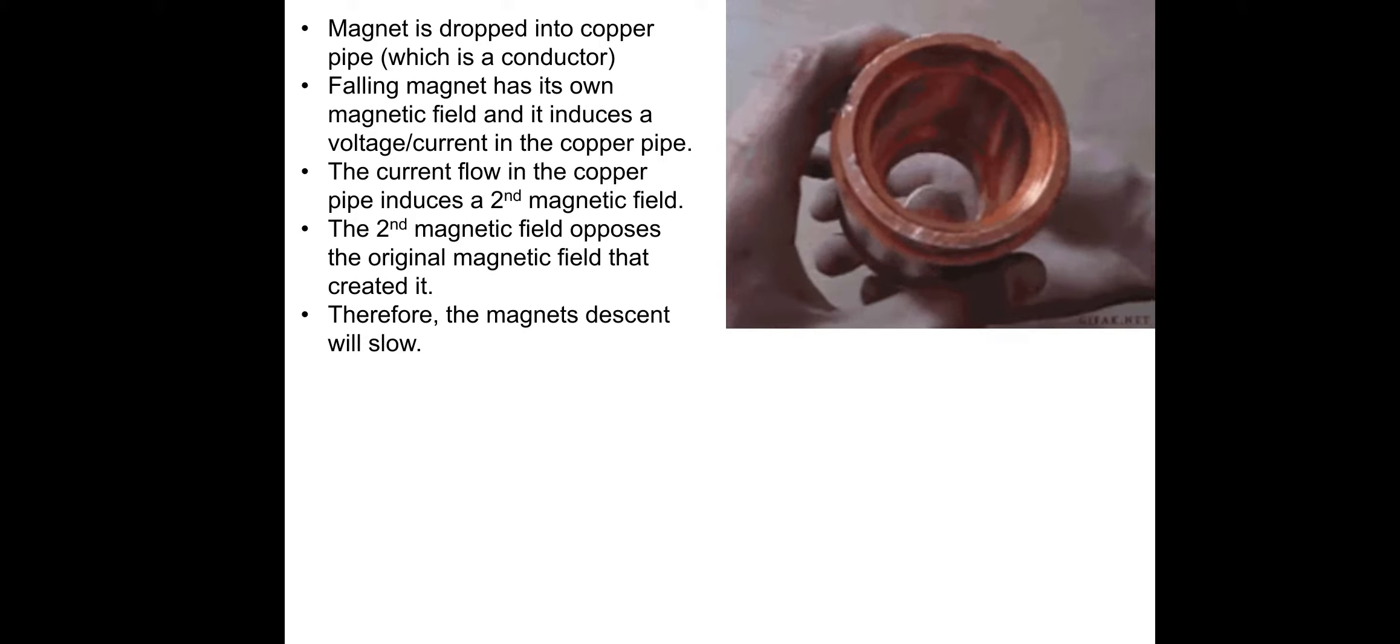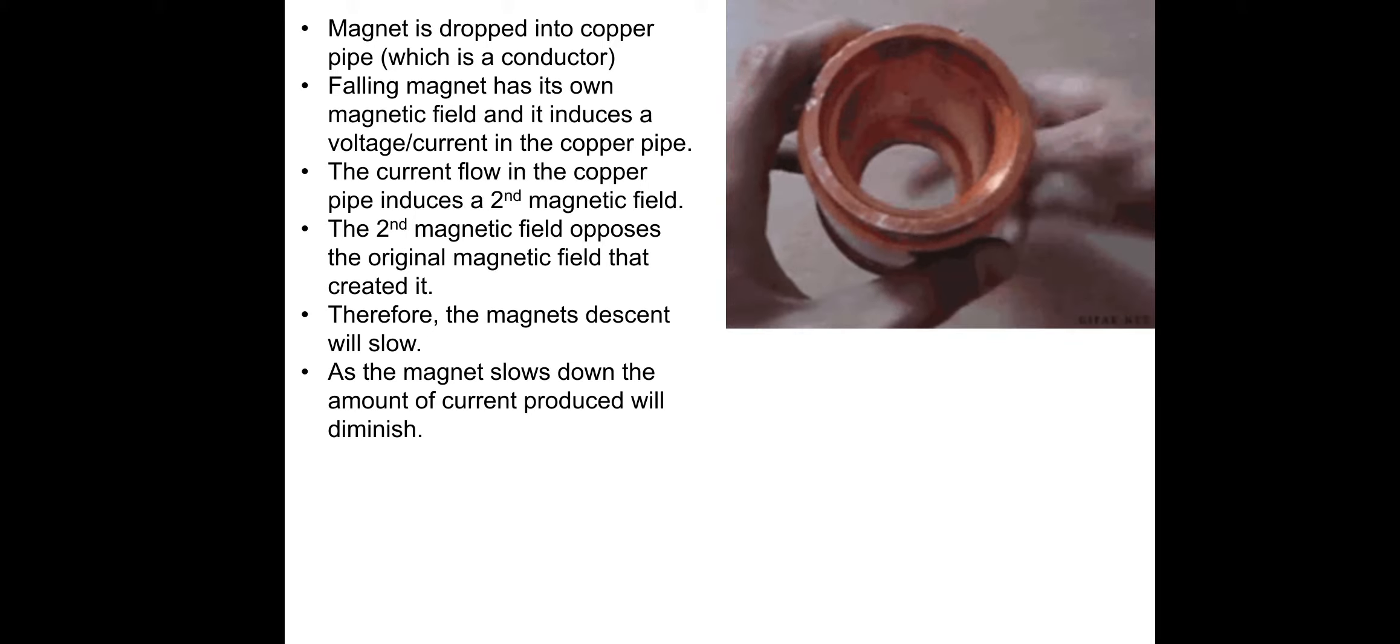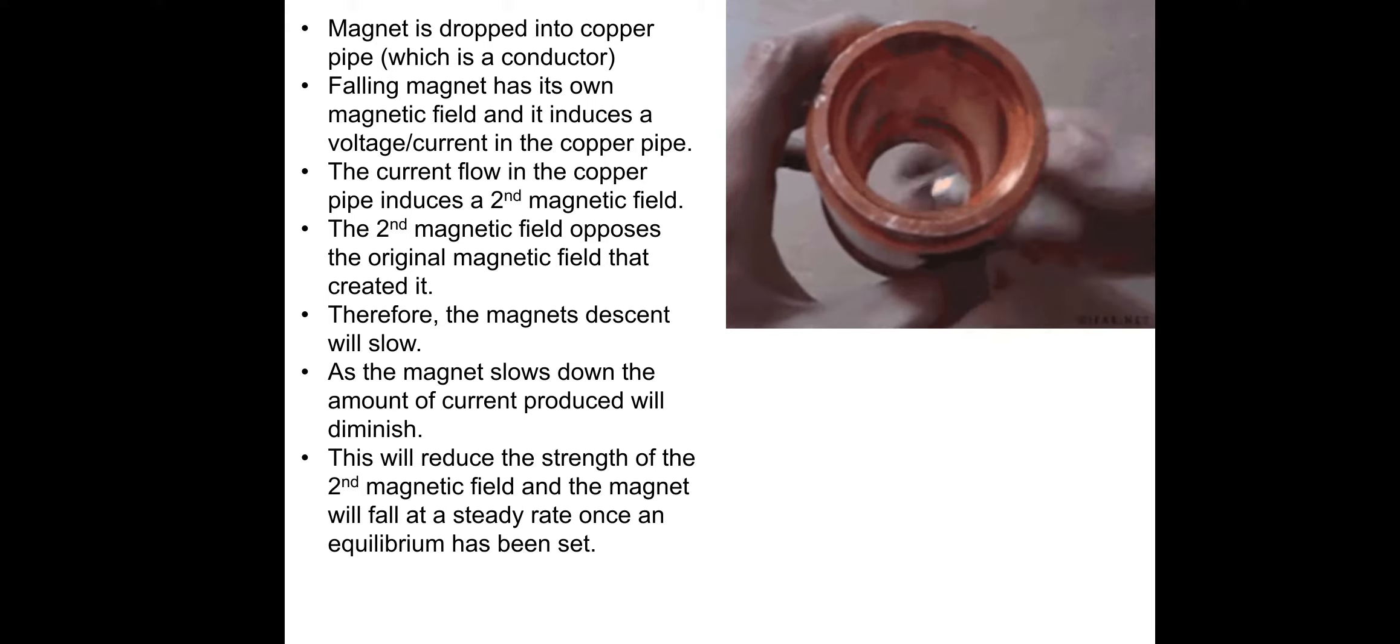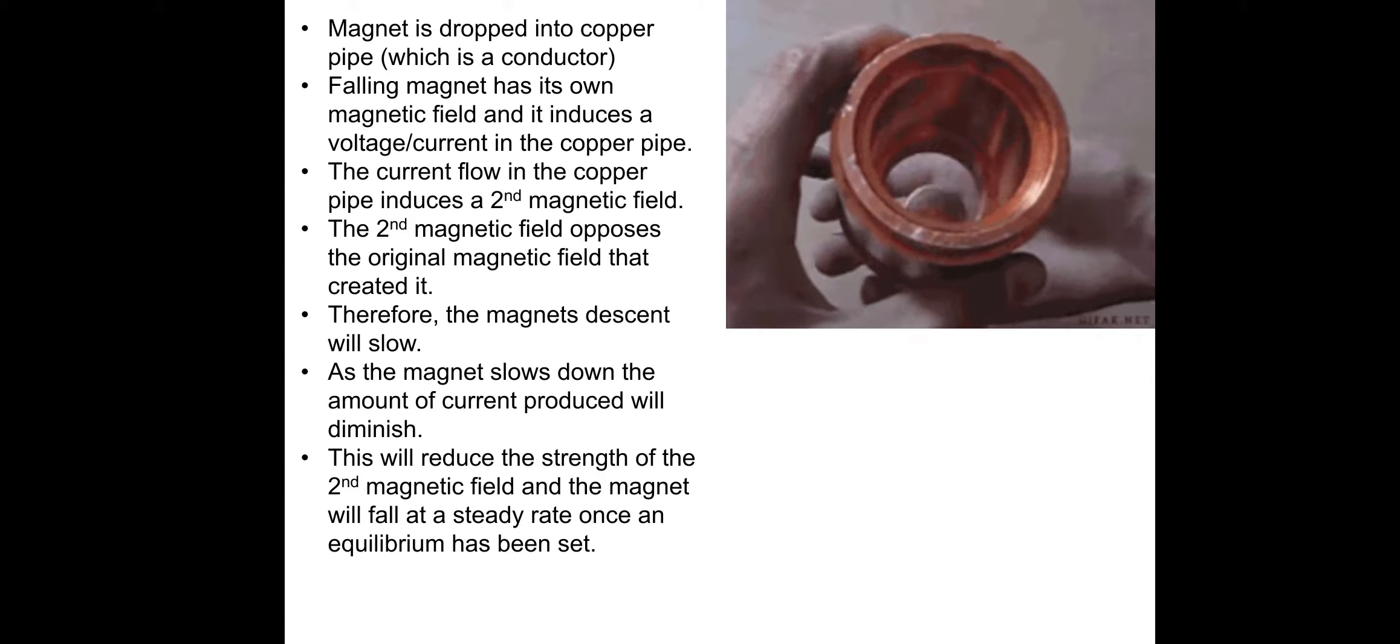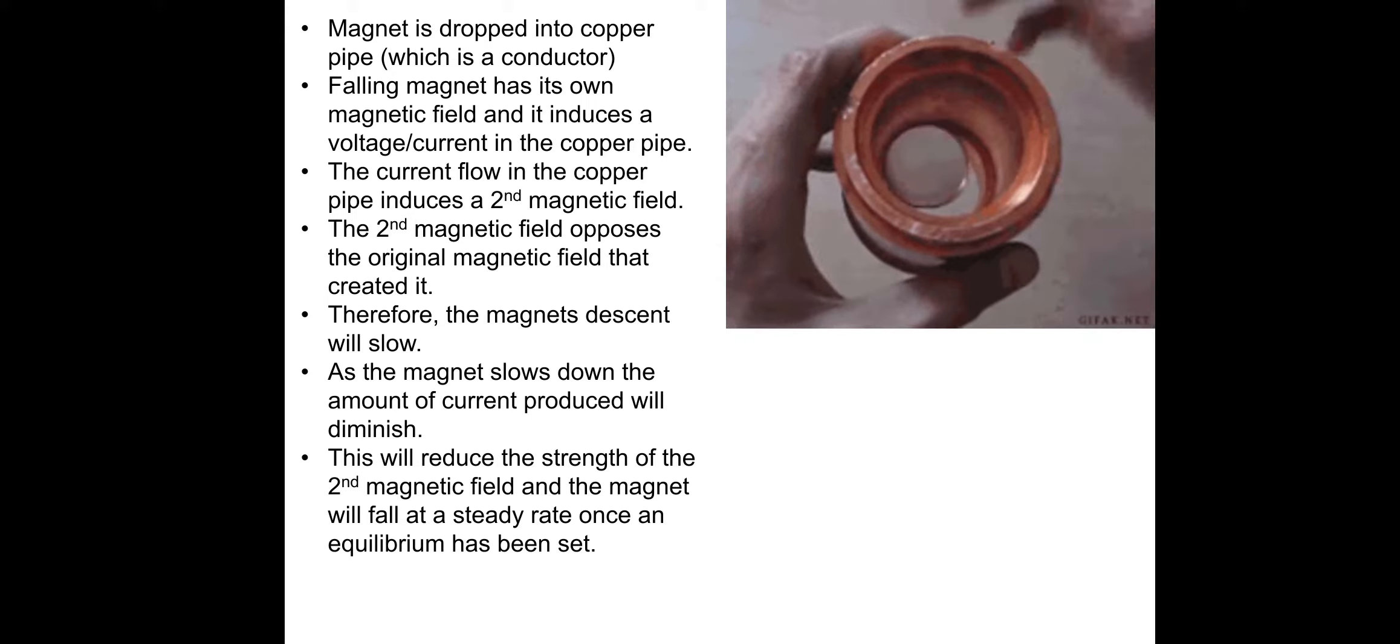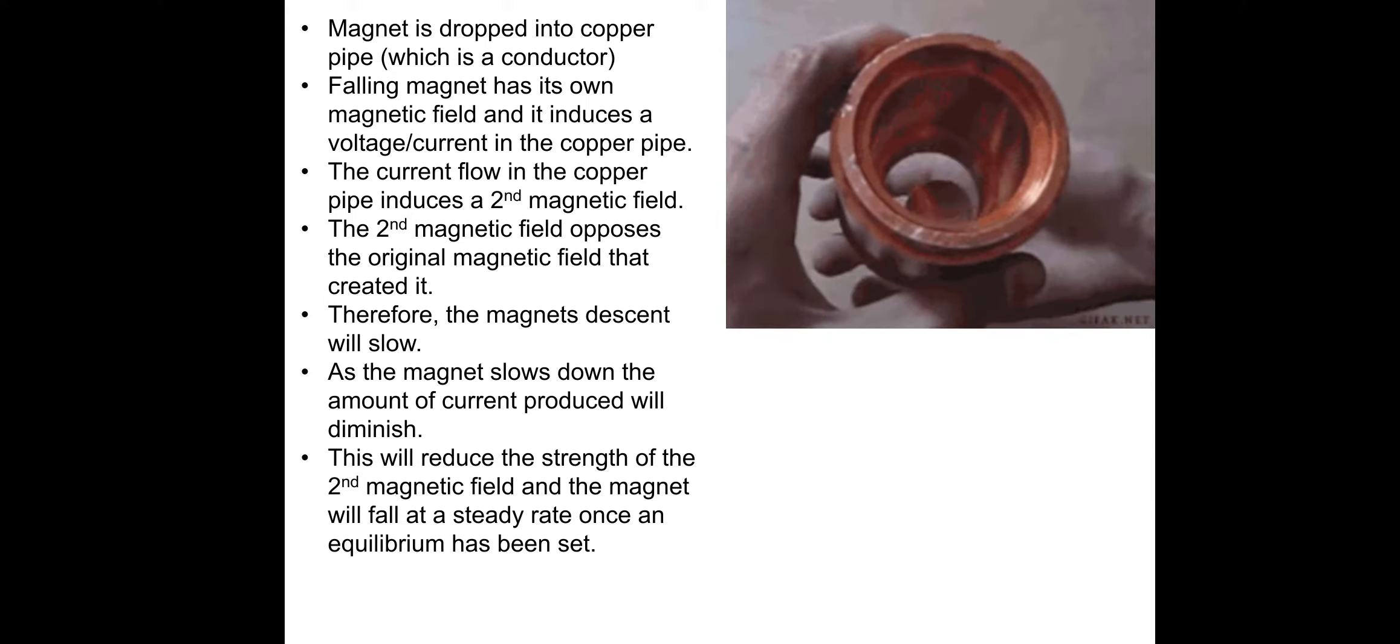Therefore, the magnet's descent will slow. And as the magnet slows down, the amount of current produced will also diminish. And this will reduce the strength of the second magnetic field, and the magnet will fall at a steady rate once an equilibrium has been set. So this is what Lenz described.